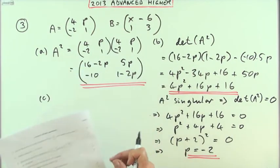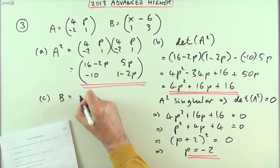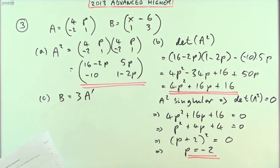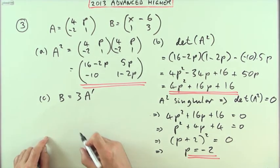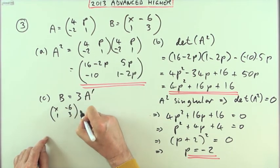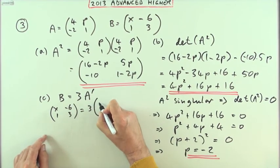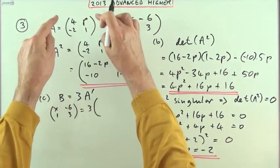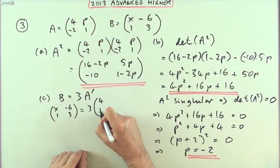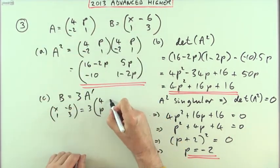And part c: if B is equal to 3 times the transpose of A, find the values of p and x. Well that says that B, which is x negative 6, 1, 3, should be 3 times the transpose of A. The transpose of A means to change each row into a column. The first row becomes the first column, the second row becomes the second column.